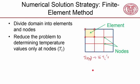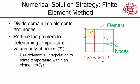And that's a big simplification, and that's the advantage of discretization. And to use polynomial interpolation to relate temperature within an element to the nodal temperatures. If I want to know what's the temperature there, I would interpolate between these four values.